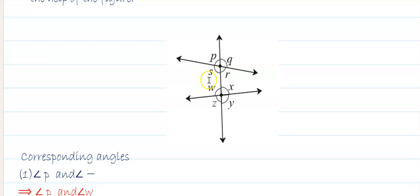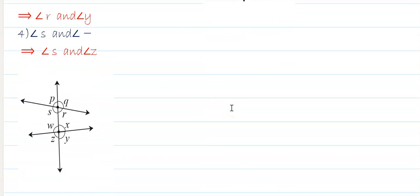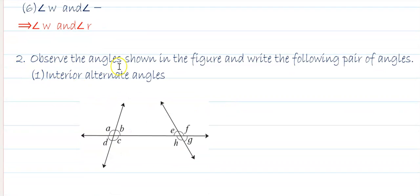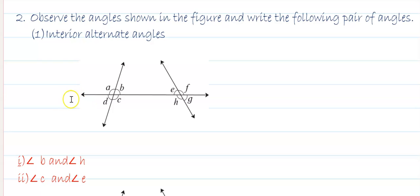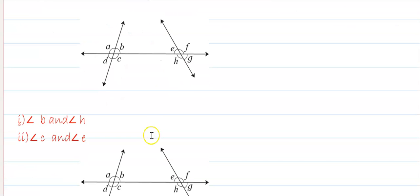The interior angles are: angle S and angle W; angle R and angle X. The exterior alternate angles are: angle P and angle Y; angle Q and angle Z. Now for the next exercise — observing the angles shown in the figure — the interior alternate angles are: angle C and angle E (first pair), and angle B and angle H (second pair).